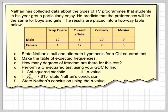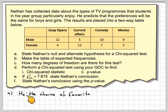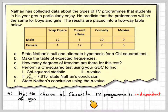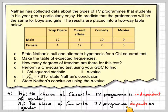This is called a chi-squared test, split up into different parts to make it easier to follow. The first part is to state Nathan's null and alternate hypothesis. The null hypothesis H0 is: the choice of favourite TV programme is independent of gender. The alternate hypothesis is: the choice of favourite TV programme is dependent on gender.